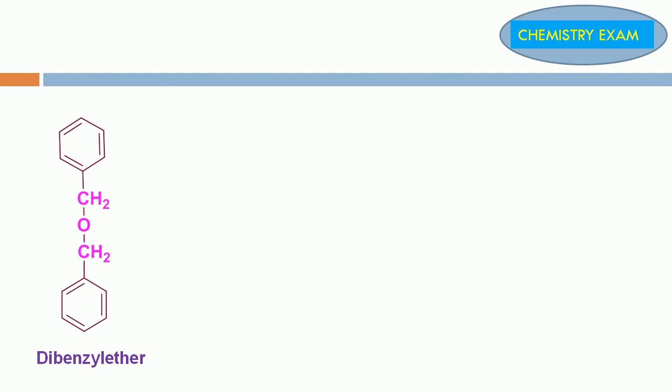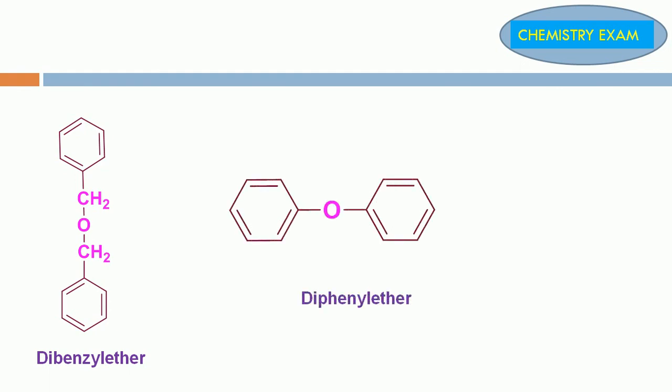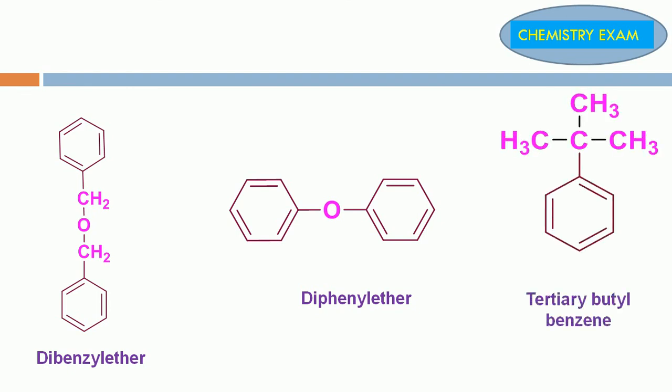Benzyl: 2 benzyl groups attached with 1 oxygen atom is called dibenzyl ether. 2 phenyl groups attached with 1 oxygen atom is called diphenyl ether. Tertiary butyl group substituted in benzene ring is called tertiary butylbenzene.